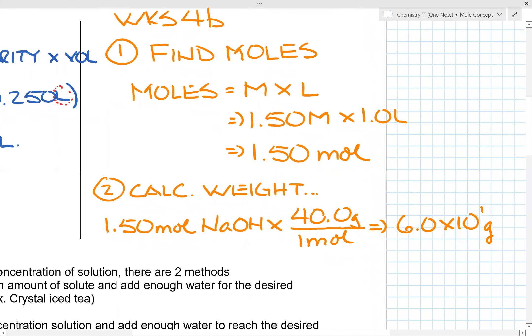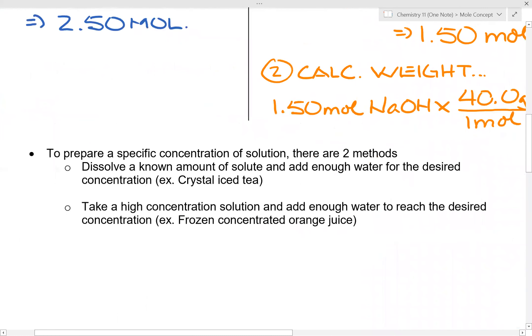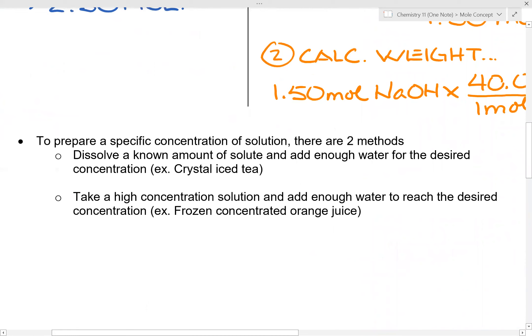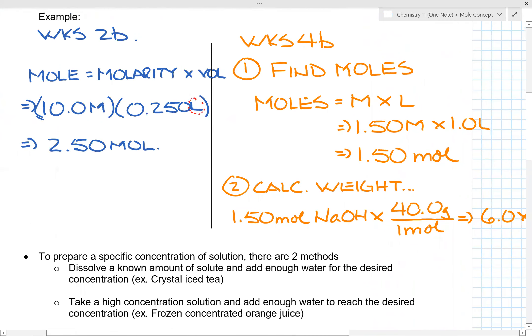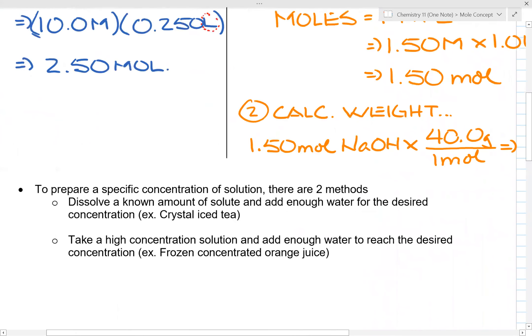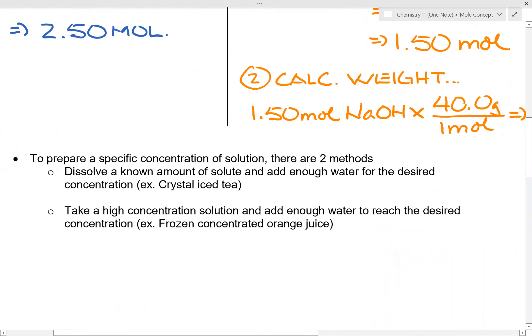There is a little note about how we can make a concentration of solution. There are two different methods: dissolve a known amount of solute and add enough water for the desired concentration—that's what we've done with the calculations up here. The other one is take a high concentration solution and add enough water to reach the desired concentration. Those types of calculations we will do a little bit later on. Thank you very much. Have a good day. Bye-bye.